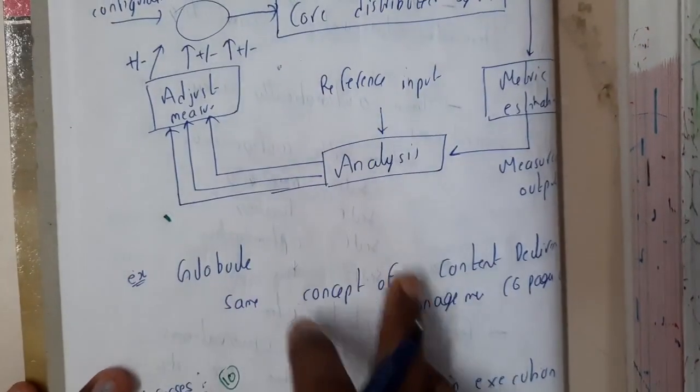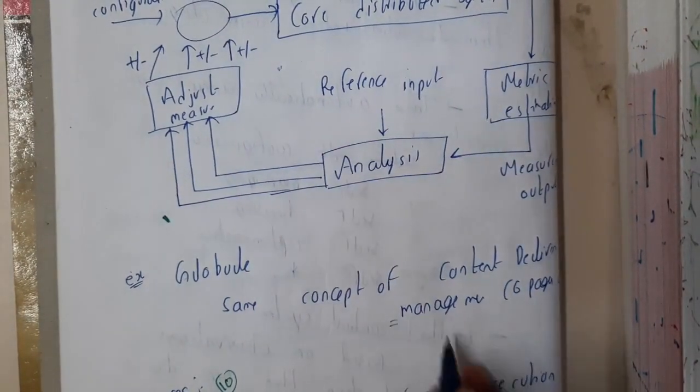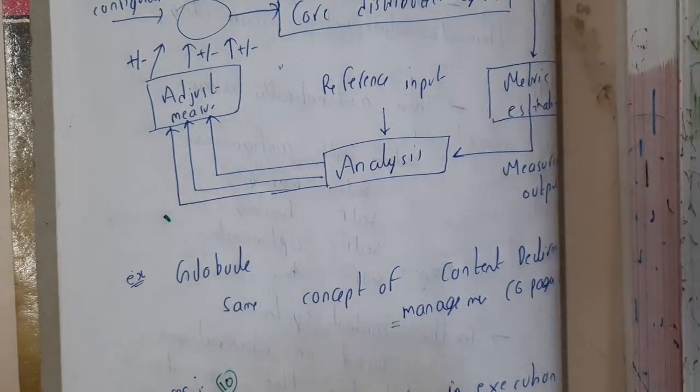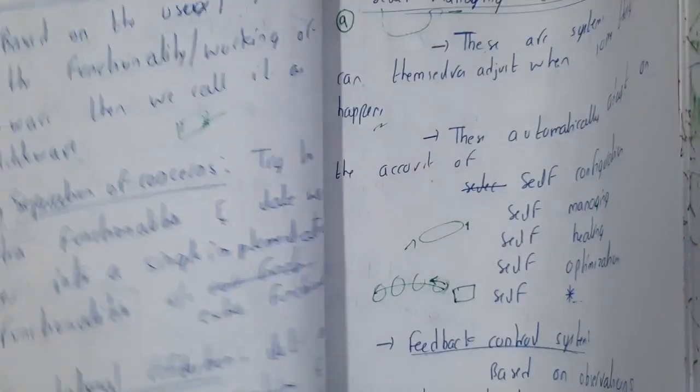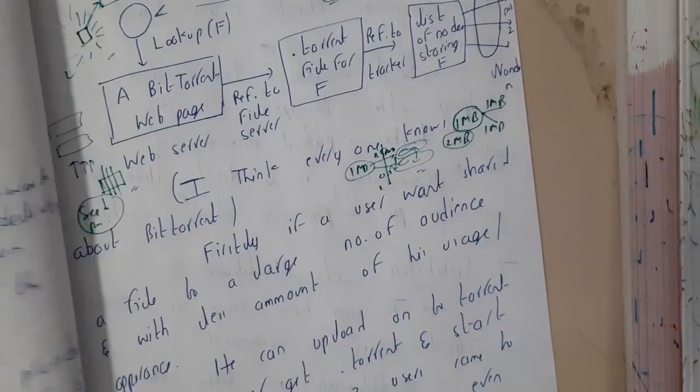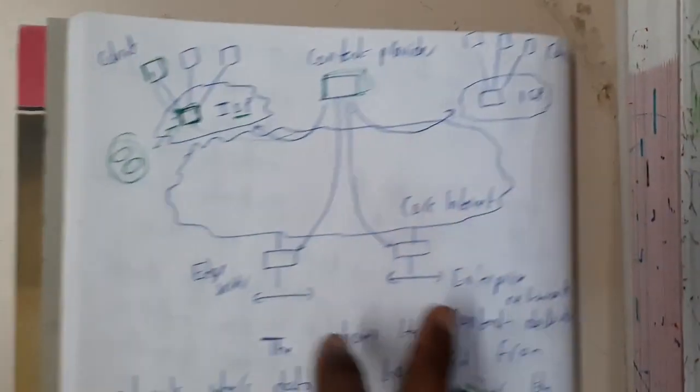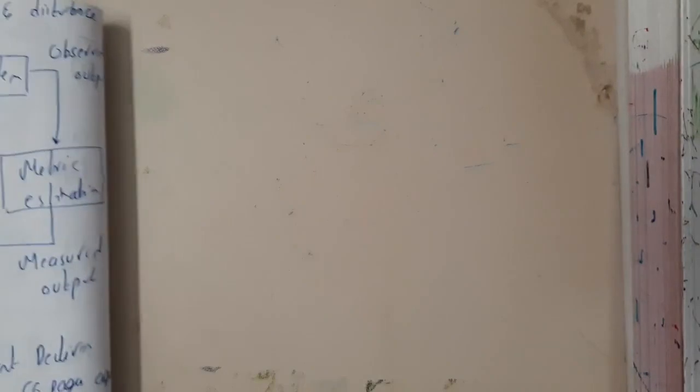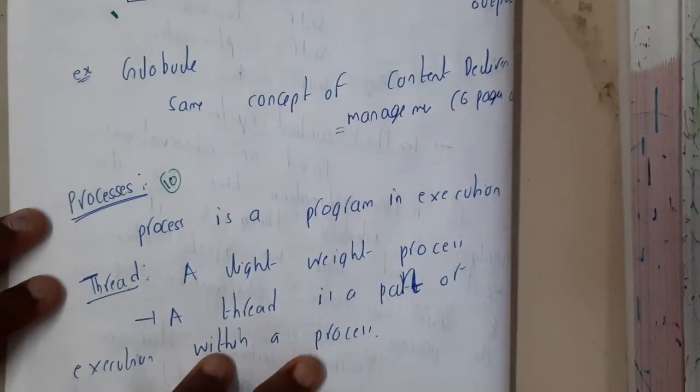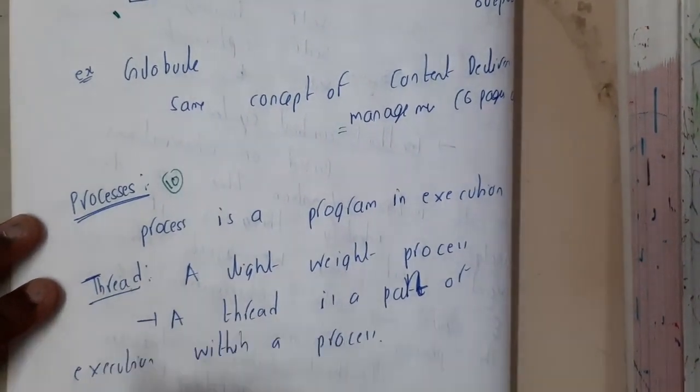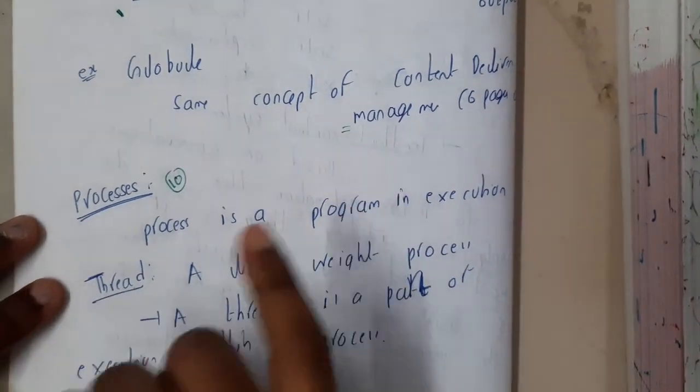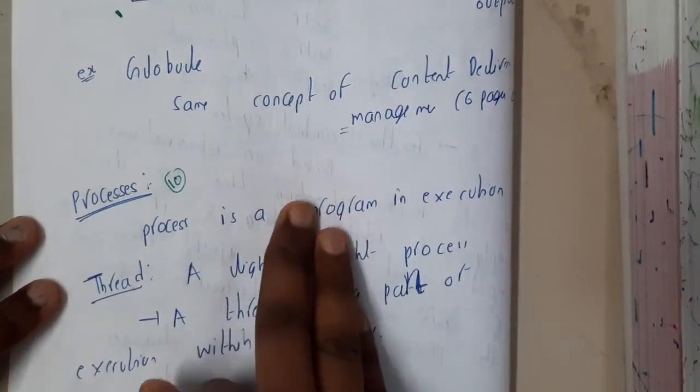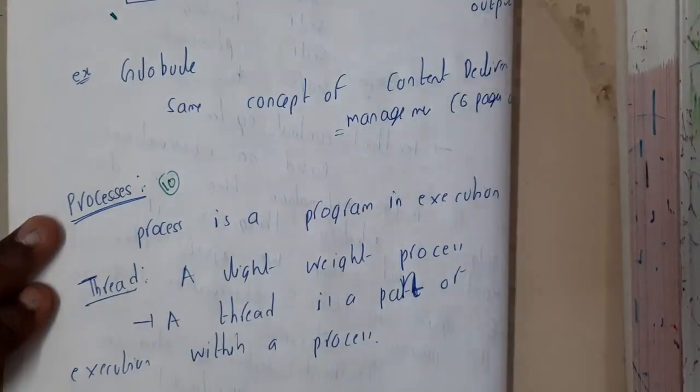The best example for this is content delivery management. In one of our previous lectures around five to six pages ago, we discussed content management system in hybrid. The concept is the same. I hope everyone got a clear idea. In the next lecture, we will discuss processes, threads, and multi-threading. Let us meet in the next lecture. Thank you.